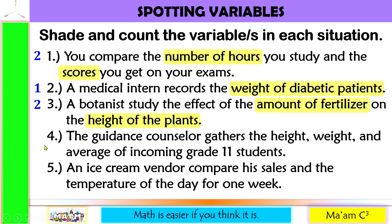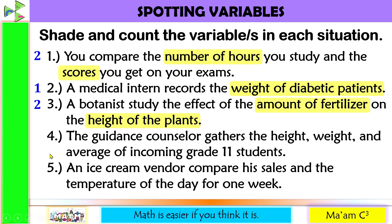Number four: the guidance counselor gathers the height, weight, and average of incoming grade 11 students. The variables are: the height, the weight, and the average. We have three variables.